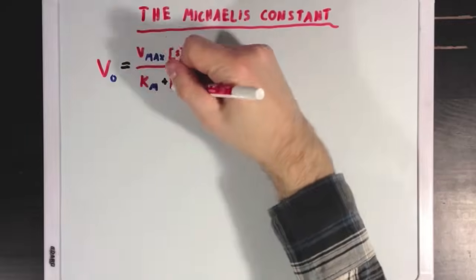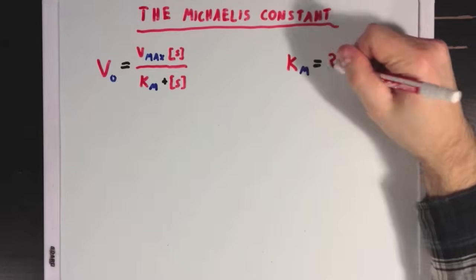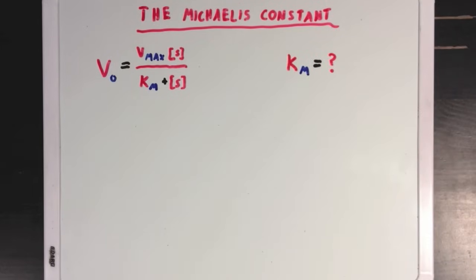So, let's take a few steps back and talk about the Michaelis constant. First, I'll write out the Michaelis-Menten equation, and if you remember, we created this new term, which I called KM, but we never really talked about what it meant, so let's get to that.